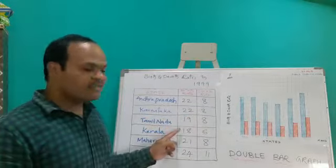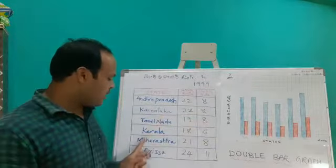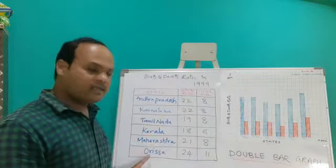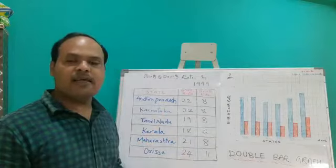Kerala, birth rate is 18 and death rate is 6. Maharashtra, birth rate is 21, death rate is 8. In Orissa, birth rate is 24 and death rate is 11.